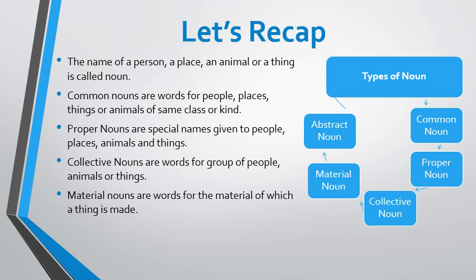Material noun refers to words for the material of which a thing is made — things that can be used to make other things. For example, wool is a material noun — from wool you can make a sweater, a jacket, or a cardigan. Cotton is another material noun — from cotton, cloth can be made.